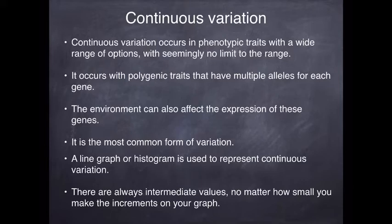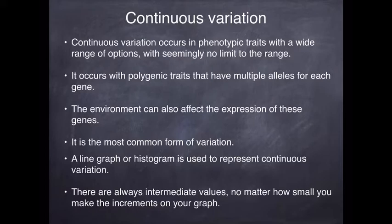When we have continuous variation, we always draw that as a line graph or as a histogram. Remember, a histogram is a bar graph with no spaces between the bars. The interesting thing about continuous variation is that however small you make your increments on your graph, you will still have intermediates. So if we did a graph of height with one centimetre increments, you could reduce that to half a centimetre and still have bars at every point, or a quarter centimetre — there would still be intermediates no matter how small you made your increments.